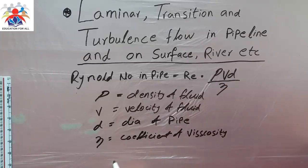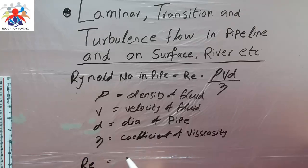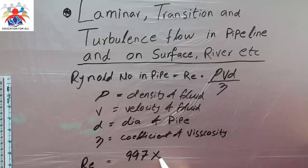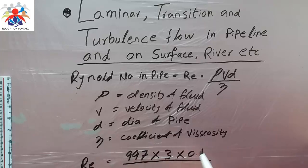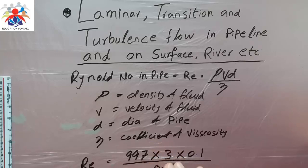Let's go through an example. The density of the fluid we have is 999 kg/m³. Multiply by velocity, which is 3 meters per second, and the diameter is 0.1 meter, divided by the coefficient of viscosity of the fluid, which is 0.38. In this example we are using water as the fluid.